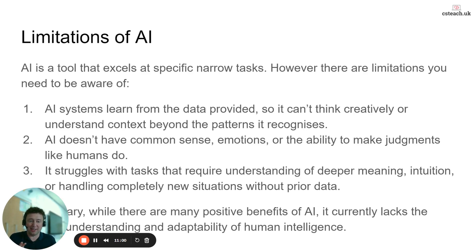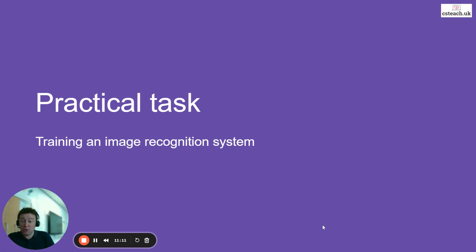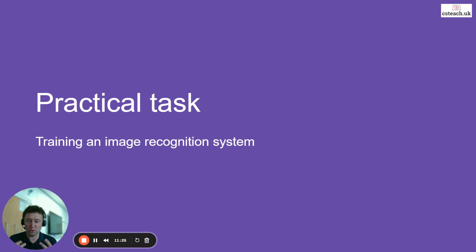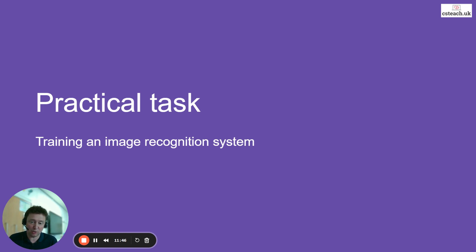So that's some limitations of AI to be aware of. In summary, there are huge benefits to AI, but it lacks the understanding and adaptability of human intelligence — that's why we don't currently have general AI, or AGI. Today's practical task is on training an image recognition system using something called Teachable Machine. I've provided a set of cat photos and dog photos and some things to test against the training data. You can upload those images, test them out, and hopefully see that it doesn't always get it right — but it's all about context and the training data you've provided. Thank you for your attention, and if you have any feedback or questions please add them to the box coming up.